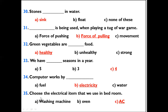Question 35: Choose the electrical item that we use in the bedroom. Options: Washing machine, oven, AC. The right option is AC. AC is used in the bedroom.